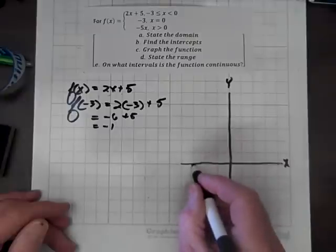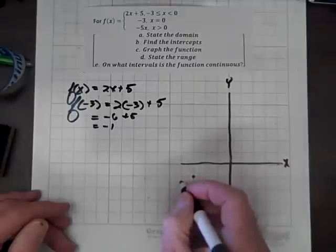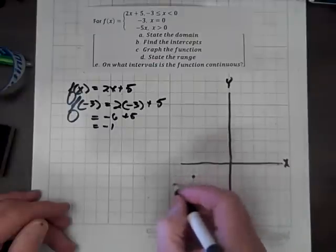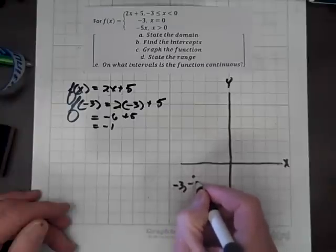So the ordered pair is the x-coordinate of negative 3 and the y-coordinate of negative 1: (-3, -1).